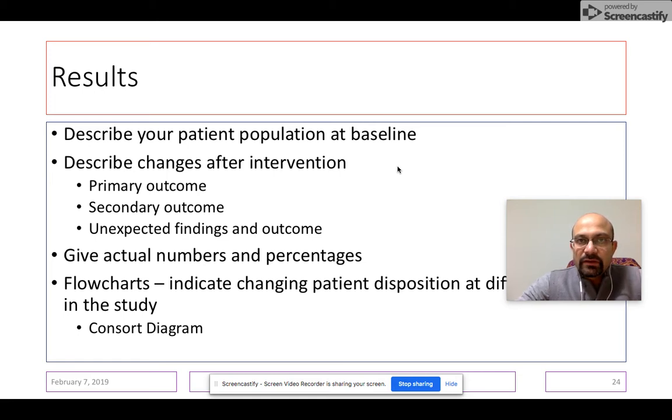So the results usually are divided into two portions. The first section of the results describes your patient population at baseline. So you want to tell the reader how the population was constructed or what were the characteristics of the subjects at the baseline when the study was started. So this is what is table one of your paper and this is also the first section of any manuscript when you are describing the results section.